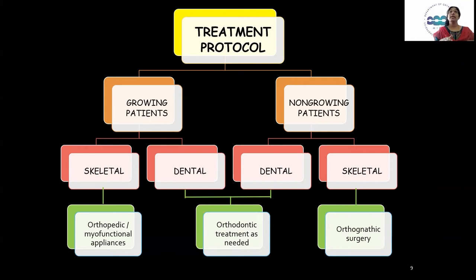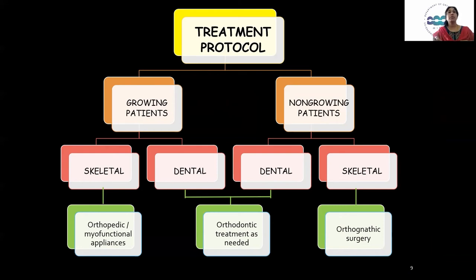In skeletal non-growing cases, we can divide them into mild to moderate and severe. In mild or moderate cases, orthodontic camouflage using fixed orthodontic treatment can be done. For skeletal maxillary retrognathism, maxillary advancement surgery is indicated. In severe Class 3 with mandibular prognathism, a surgical setback using bilateral sagittal split osteotomy is performed. Surgery is never done in growing patients and is typically reserved for after 18 years of age when growth has stopped.